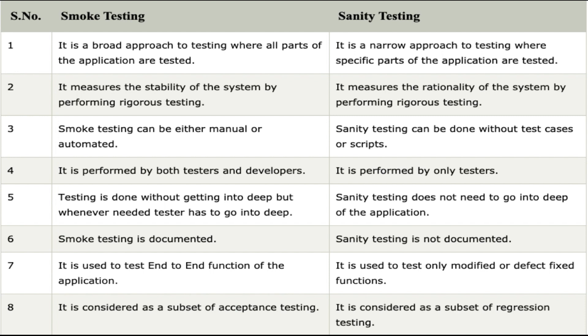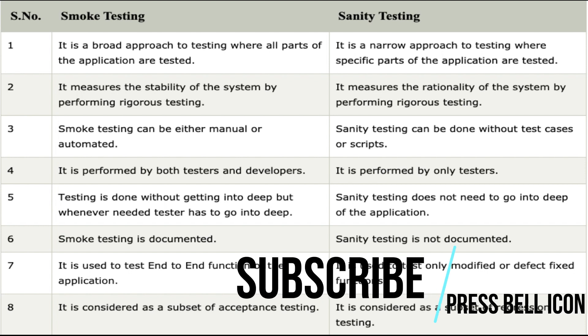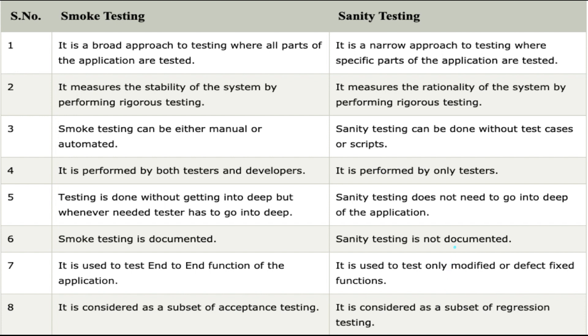Point six: smoke testing is documented, whereas sanity testing is not documented by the testers. Point seven: smoke testing is used to test the end-to-end functionality of the application, whereas sanity testing is used to test only the modified or defect-fixed functions.